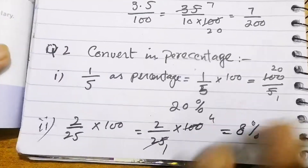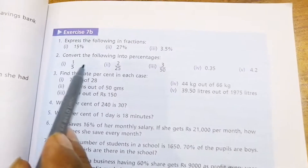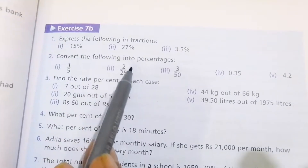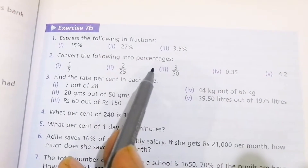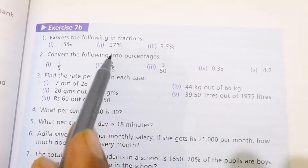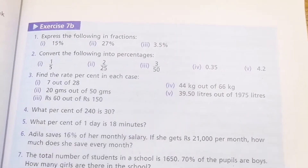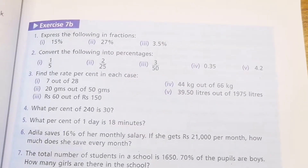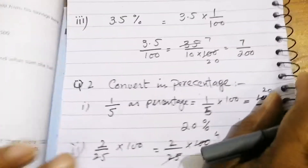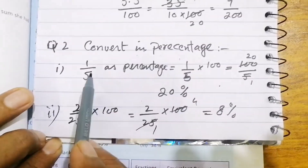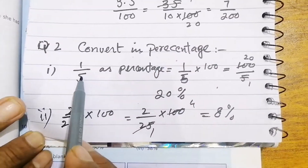Question number 2 asks us to convert the following into percentage. This is the opposite of question number 1 — now a fraction is given and we convert it into percentage.